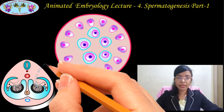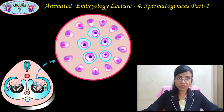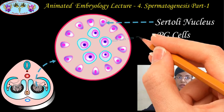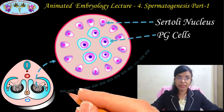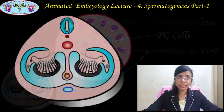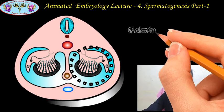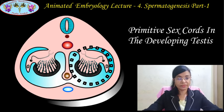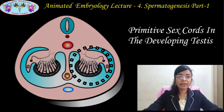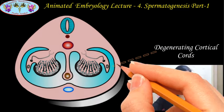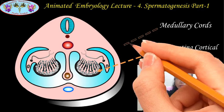In the male embryo, by the seventh week, the surface epithelial cells — the future Sertoli cells — arrange themselves around the primordial germ cells and form cord-like structures called primitive sex cords. These primitive sex cords extend from the cortex to the medulla of the developing testis. Unlike the female embryo, in the male the cortical cords degenerate and only the medullary cords are retained.